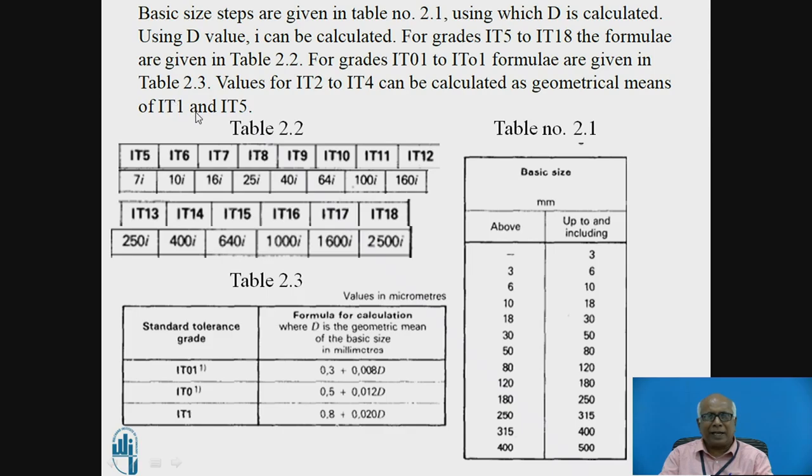For IT3, IT3 will be root of IT1 multiplied by root of IT5. Once we get IT3, then IT2 can be calculated from IT1 and IT3 as its geometric mean.